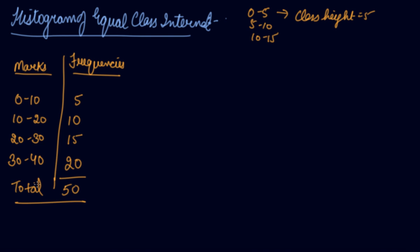In this example, the class intervals are equal. The class width of each interval is the same — there is a gap of 10 in each: 0 to 10, 10 to 20, 20 to 30, 30 to 40. So these are known as equal class intervals. Now let us see how to draw the histogram.